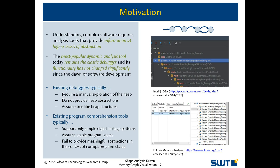Existing program comprehension tools typically support only simple object linkage patterns and assume stable program states. However, being able to handle corrupt program heaps is highly important because they make debugging necessary in the first place.